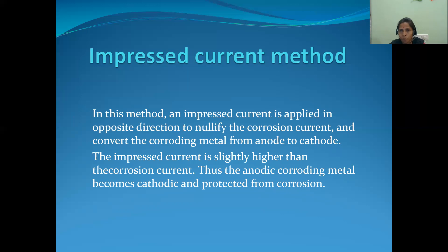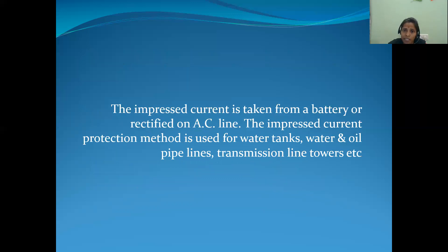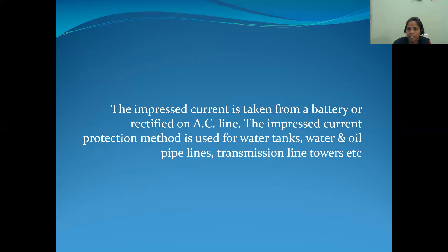The impressed current is taken from a battery or rectified AC line. This method is used for water tanks, water and oil pipelines, transmission line towers, buried pipelines, and even railway tracks. To protect these structures, we use impressed current cathodic protection.